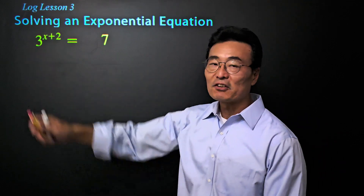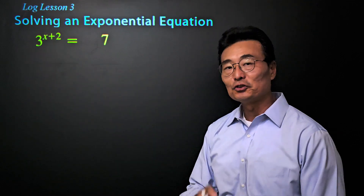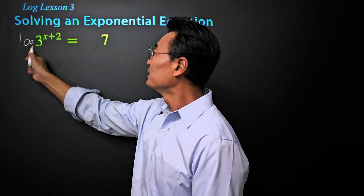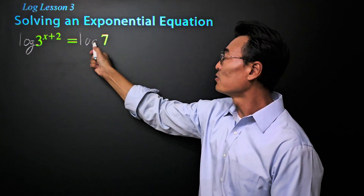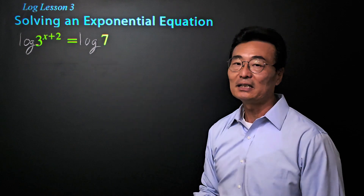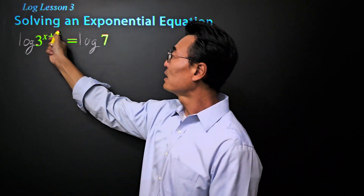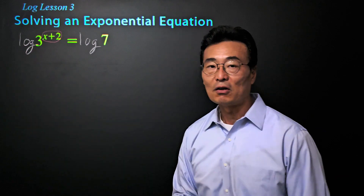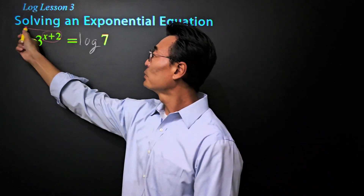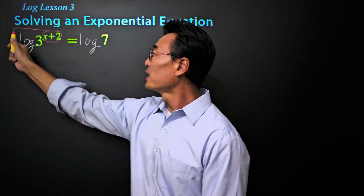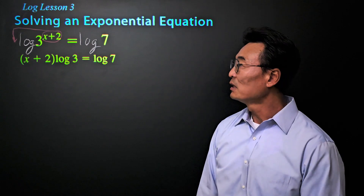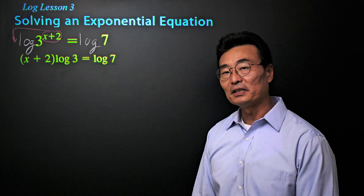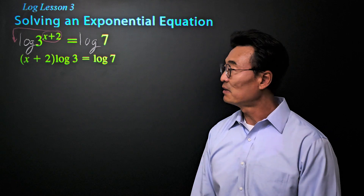When we have a variable in the exponent position, we need to use logs. First, I'm going to take the log of the left side of the equal sign and also the right side. The reason for doing that is because using one of the laws that we've learned, we're able to take that exponent and put it out in front of the log, giving us x plus two times log of three equals log of seven.